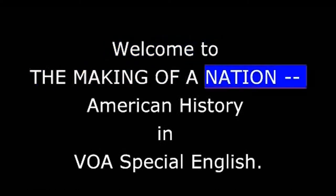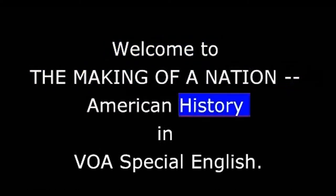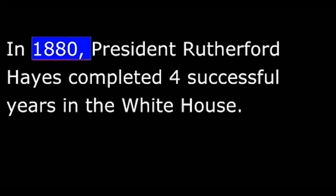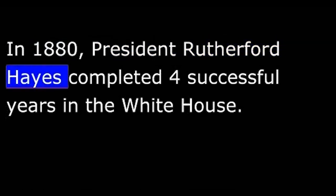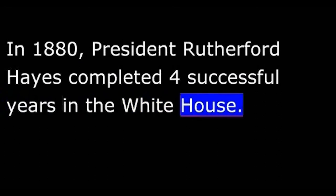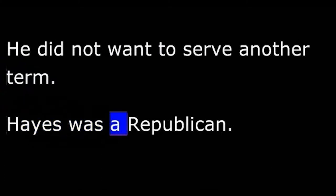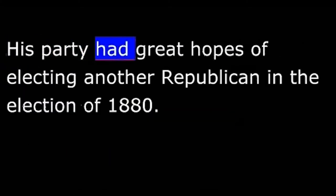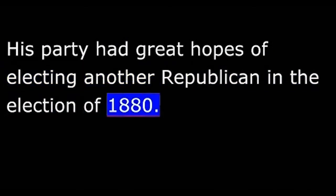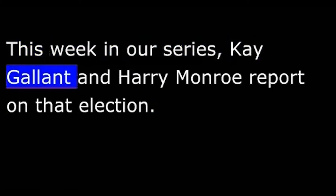Welcome to The Making of a Nation, American History in VOA Special English. In 1880, President Rutherford Hayes completed four successful years in the White House. He did not want to serve another term. Hayes was a Republican. His party had great hopes of electing another Republican in the election of 1880. This week in our series, Kay Gallant and Harry Monroe report on that election.